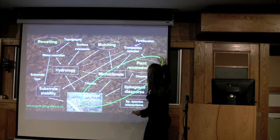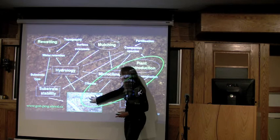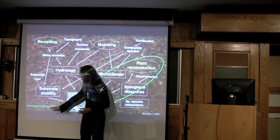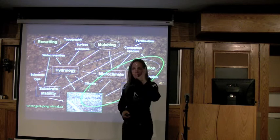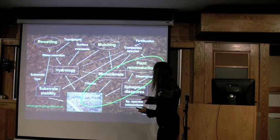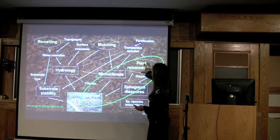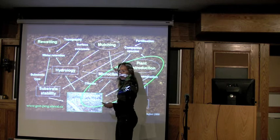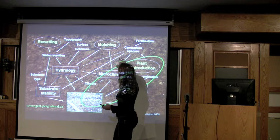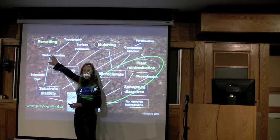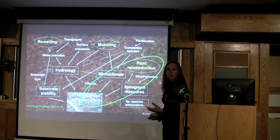Three necessary steps must all be completed for successful peatland restoration — omitting any one of them means failure. First, you must reintroduce plant material. Second, you must protect it with mulch, because sphagnum mosses have no roots and no way of controlling water loss. Third, you must block the former drainage system to rewet the site. The combination of these three actions leads to successful restoration.